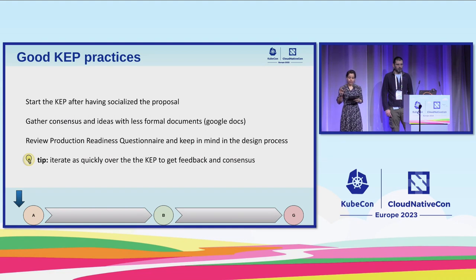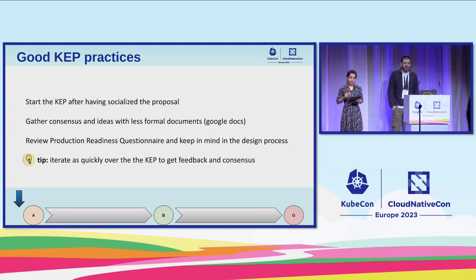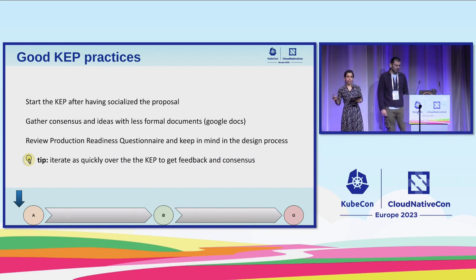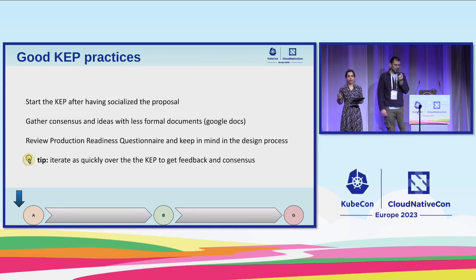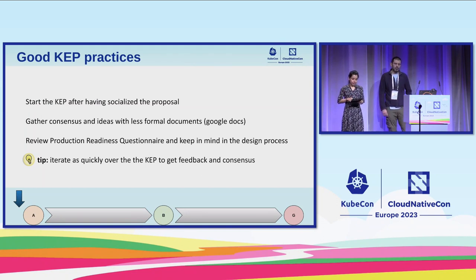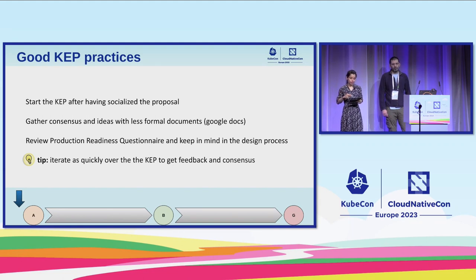An important thing to highlight here is the production readiness review. This is a part of the KEP template that we have to fill to capture the impact of the feature. It captures the impact on scalability, reliability, performance of the system, and overall user experience. This will be covered in more detail in the subsequent slides. As a quick tip, it's important to gather feedback early and at every stage — this is what helps drive consensus within the community.